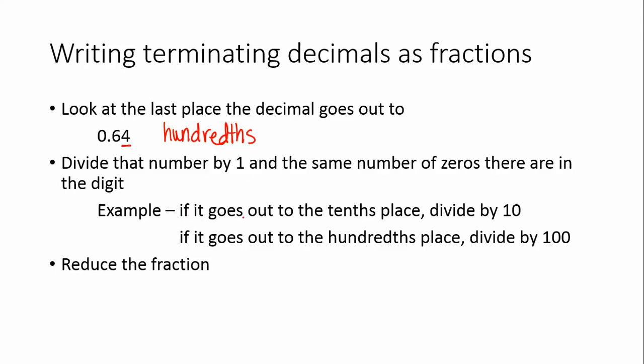So in this example, if it goes out to the tenths place, you divide by 10. If it goes out to the hundredths place, you divide by 100. And then you always reduce the fraction. This is read as 64 hundredths. So that would just be 64 over 100. And then you would reduce. And we won't do that just yet, because we'll do some examples.